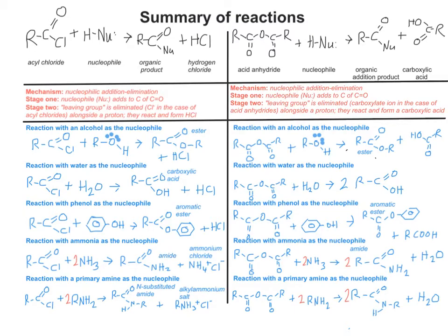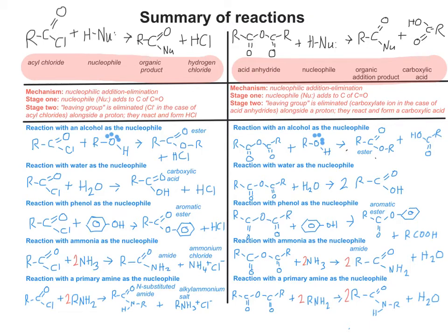Here's a summary of all the reactions of these two types of compounds. With an acyl chloride reacting with a nucleophile (written as Nu with a lone pair, plus a hydrogen attached), you get an organic product where the nucleophile has replaced the chlorine atom, and you also get hydrogen chloride as a side product. With an acid anhydride, you get a similar organic addition product, but the remainder of the acid anhydride combines with a proton from the H-Nu molecule to make a carboxylic acid.